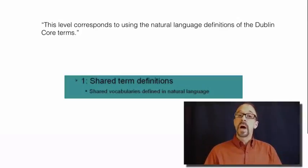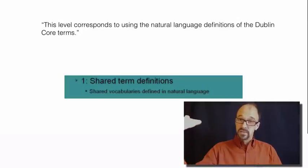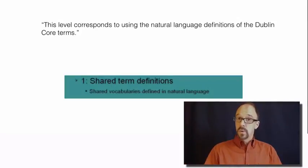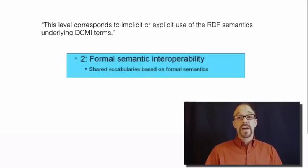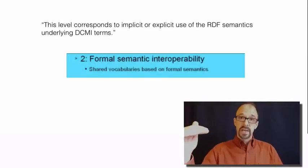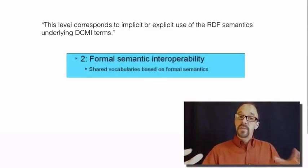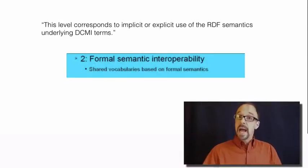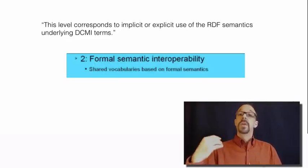In other words, at level one you're using the vocabulary of Dublin Core but not the rest of the infrastructure that exists to support its use. Level two corresponds to implicit or explicit use of RDF semantics. This level moves beyond just using Dublin Core terminology to formal definitions of that terminology and the relationships between terms, and those formal definitions are created using RDF.